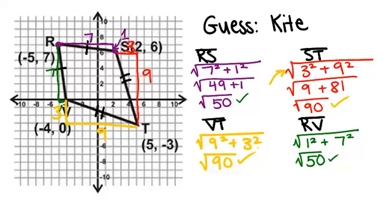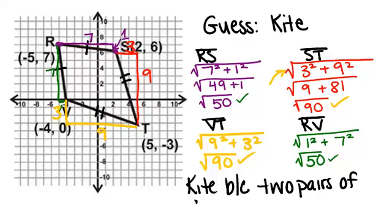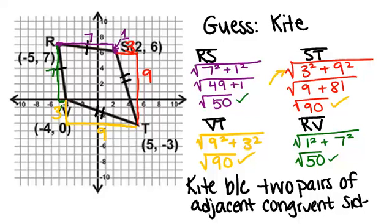Therefore, it must be a kite because it has two pairs of adjacent congruent sides. So the last thing you want to say is actually state your answer. It's a kite because two pairs of adjacent congruent sides. And you would want to leave all your work there so you show that you actually went through and checked. Thank you.